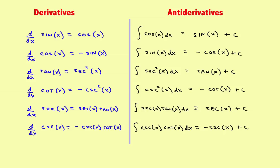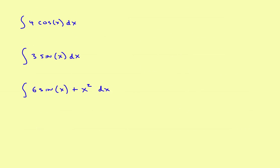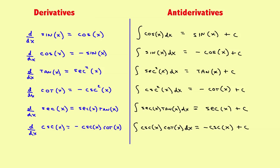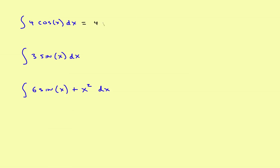Now let's take a look at how to use them — they're actually fairly easy. We'll look at a few basic examples. First, find the antiderivative of 4 times cosine of x. That will equal — first you have the constant 4, then look at your list: the antiderivative of cosine is sine of x. So the antiderivative of 4 cos(x) is 4 sine of x plus c.